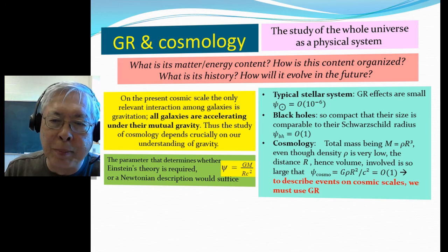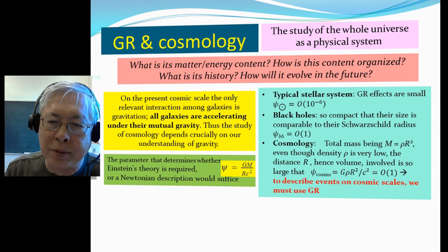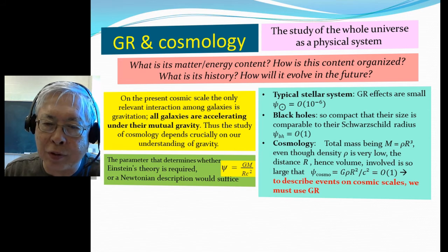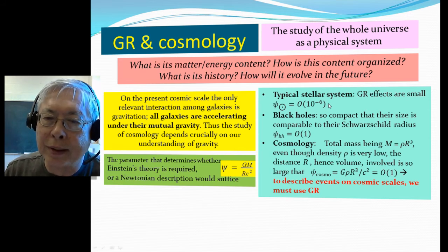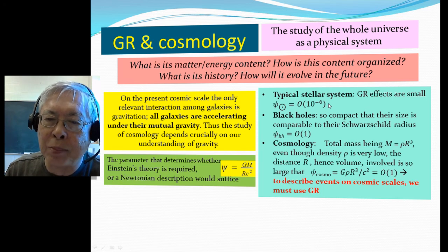So, for typical stars, like solar system, the GR effects are small because this parameter for the solar system is on the order of one part in a million. Okay, so GR effects are typically very tiny.